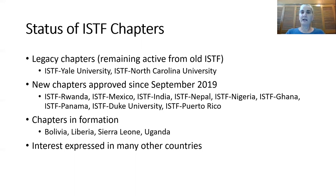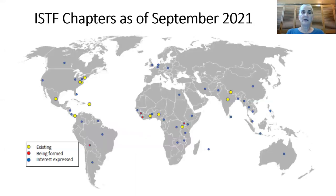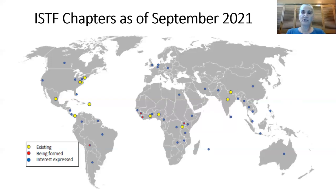In Bolivia, Liberia, Sierra Leone, Uganda, and other countries, interest has been expressed in forming chapters. This map tells the story. The yellow dots indicate the existing chapters, red dots chapters in formation, and blue dots areas from which interest has been expressed in forming a chapter.